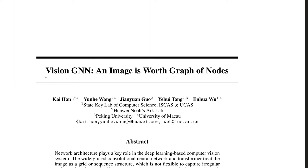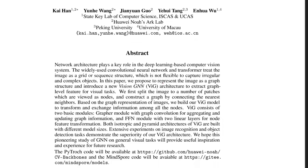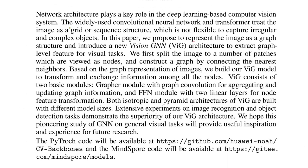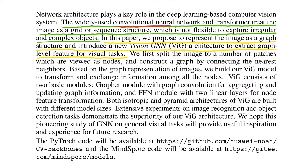In this video we are going to go over the paper Vision GNN. The abstract says that widely used convolutional neural networks and transformers treat an image as a grid or sequence structure, which is not flexible to capture irregular or complex objects. Instead, this paper proposes to present the image as a graph structure and introduces a new Vision GNN architecture to extract graph-level features for visual tasks, going after both CNNs and transformers for vision applications.